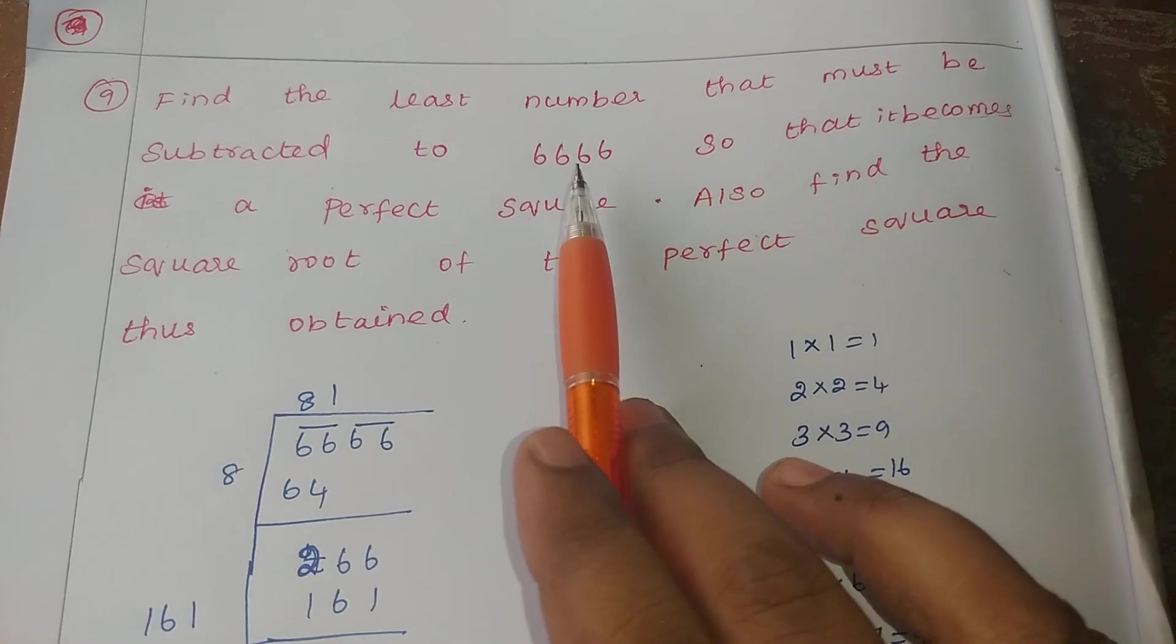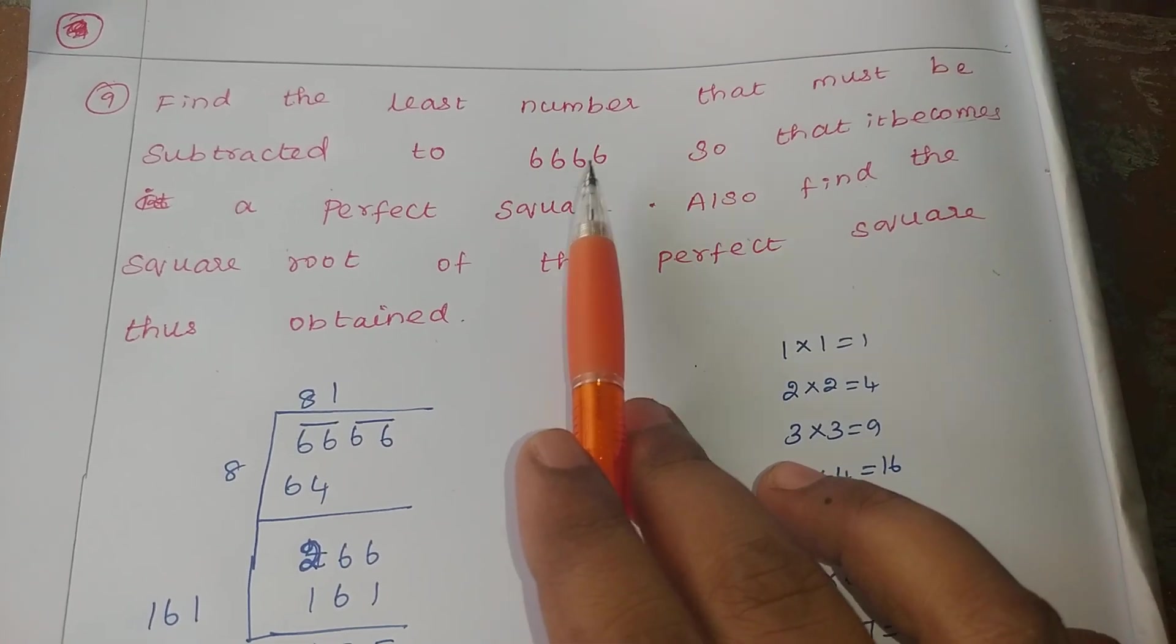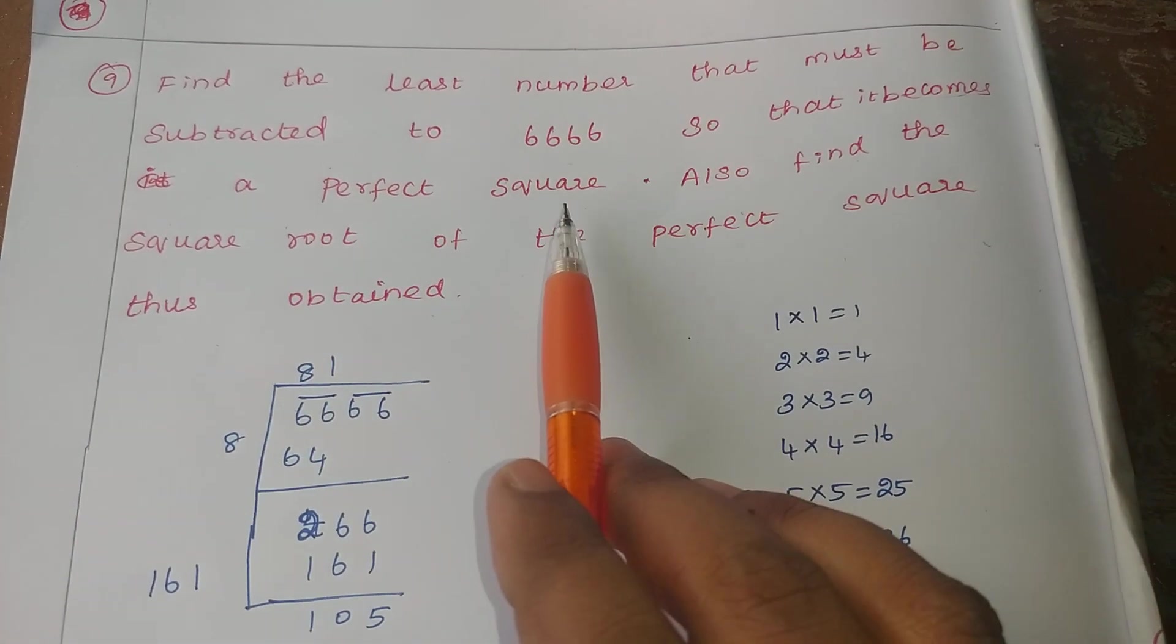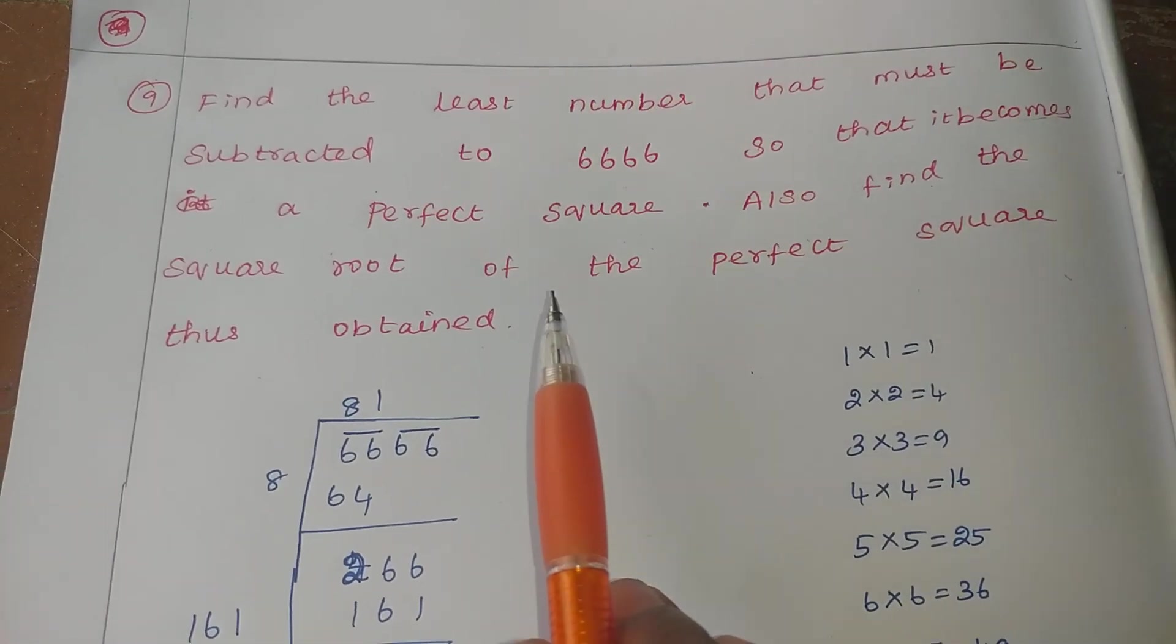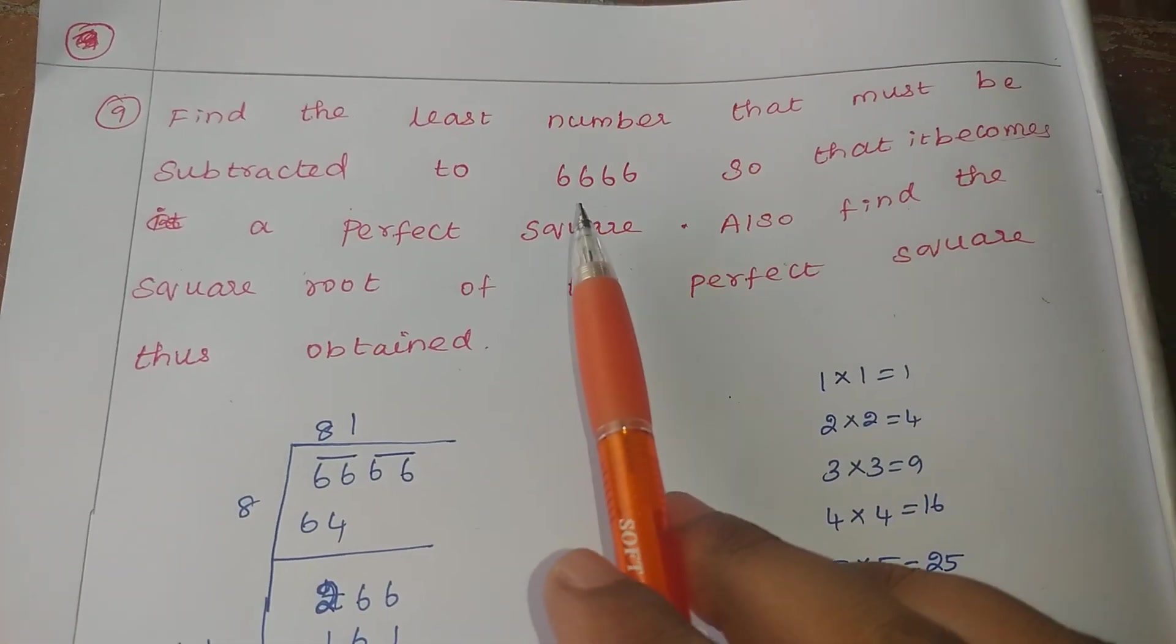First what you want to find out, the least number you want to find out. That number you want to subtract, we get what? One perfect square. In that square you want to find out the square root. Now we will go further.